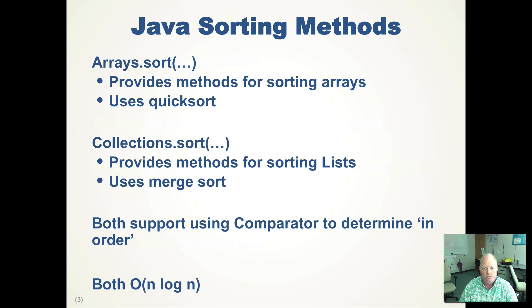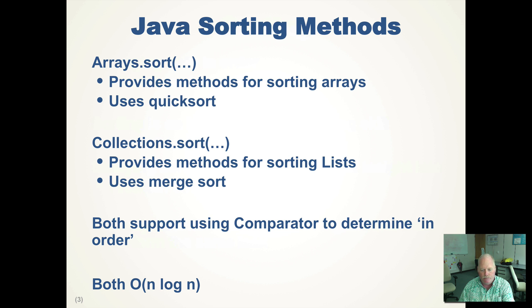Java does supply some sorting methods out of the box. You can use the Arrays class — it has a sort method that provides sorting for arrays of things, and it uses the quicksort, which is a complex sort we'll talk about later in the semester. The Collections class provides a sort method that allows you to sort lists, using a different algorithm called the merge sort. Both of these methods use a comparator that allows you to determine the in-order-ness of the things you are sorting.